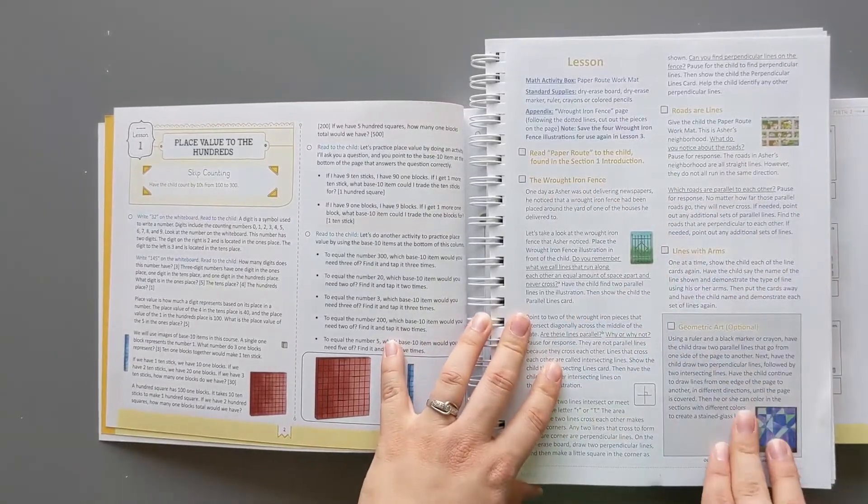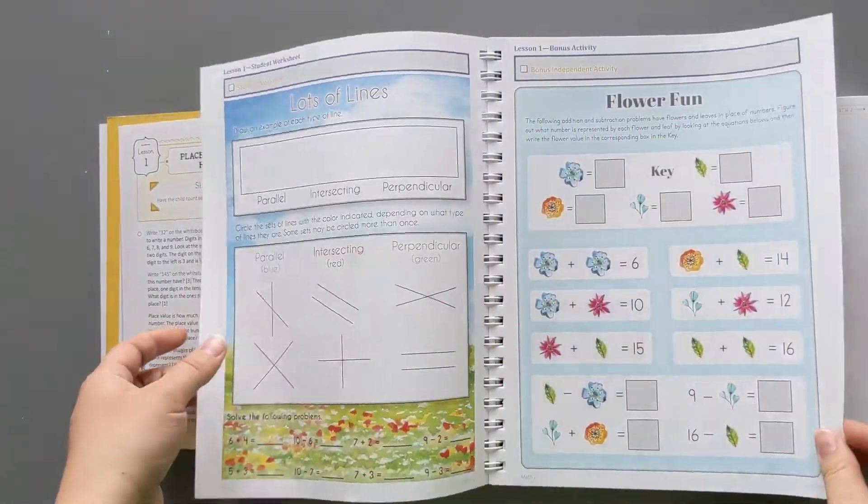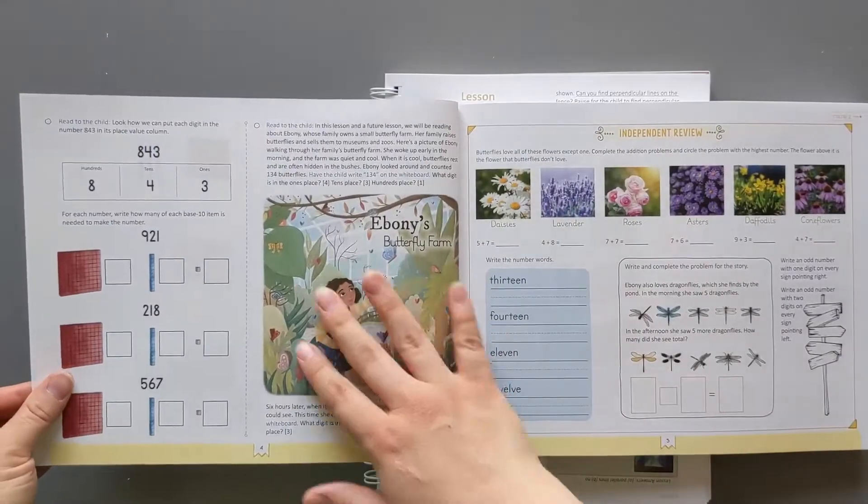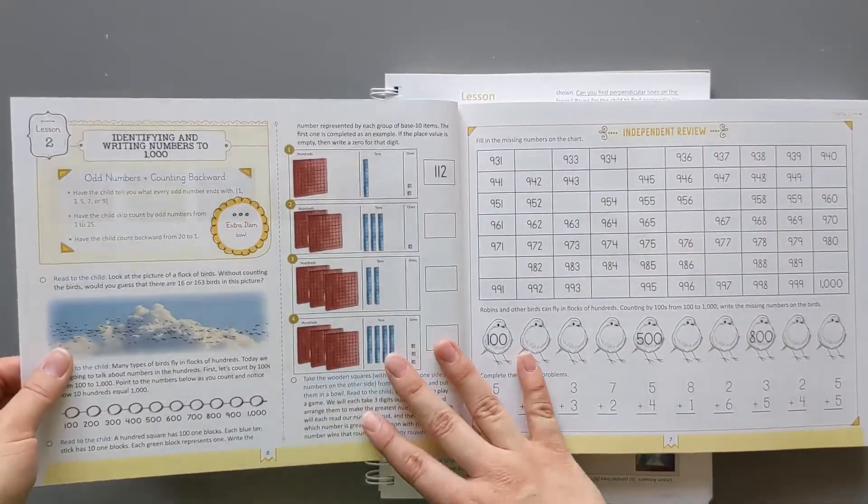Lesson gives us the work, an optional activity, worksheet, and a bonus activity. For the new one we have the lesson work all the way through here, independent review, and then it goes into lesson two.